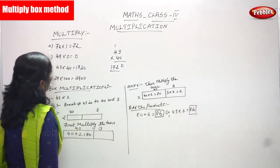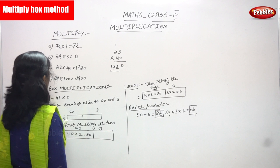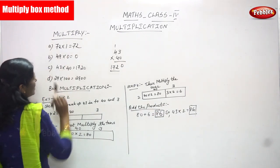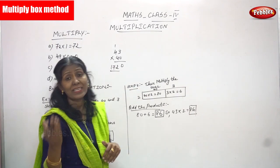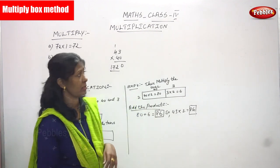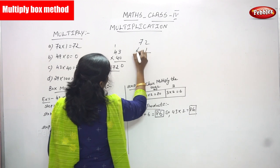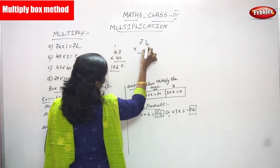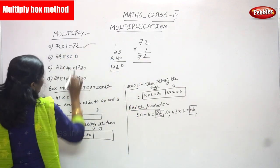So 72 into 1. We are going to solve this problem. Rule 1 is applicable here: any number multiplied by 1, you get the same number as the product. So 72 into 1 you get 72. For example, you can verify: 1 times 2 is 2, 1 times 7 is 7. So rule 1 is applicable.